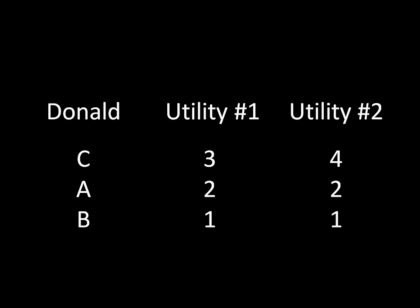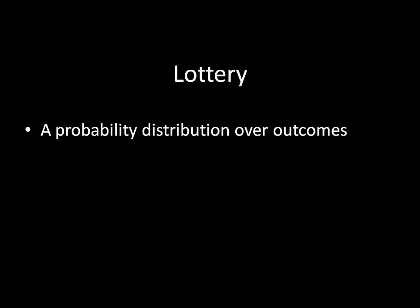And that's where lotteries come into play. In game theory, a lottery is a probability distribution over outcomes. For example, receiving A with probability one-half and B with probability one-half, that's a probability distribution over outcomes, which means we have a lottery.